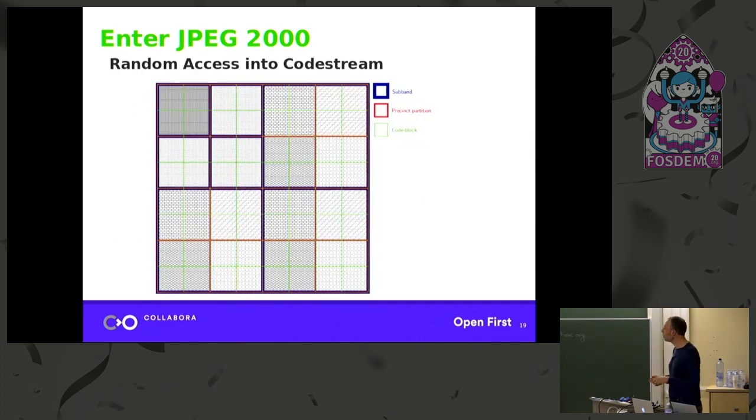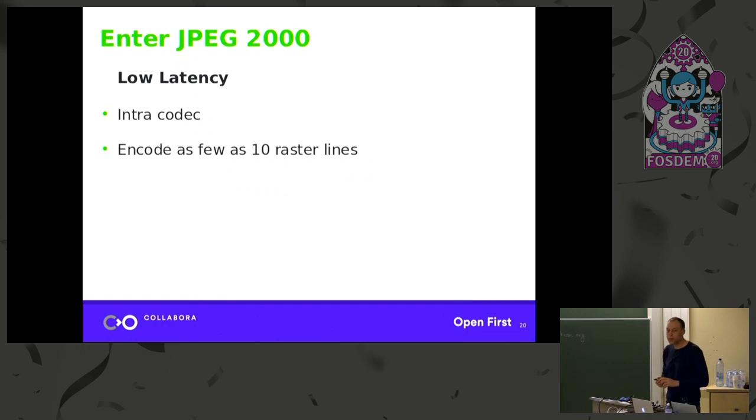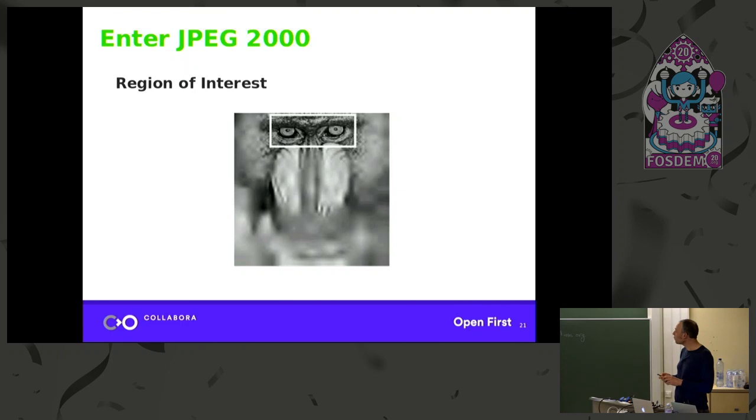And then you get random access into the code stream if you do progression by code blocks. So if you have an enormous image from remote sensing, let's say you want to just decode a small piece of the image, you can actually put markers into the code so that you can locate that particular region of the image and decode that, which is useful for huge images. We also do low latency because it's an intracodec. So each frame is encoded individually, and you can get very low latency, unlike H.264, where you have groups of pictures that are encoded together. Each frame is encoded separately. Also a region of interest where you just increase the quality in a certain part of the image. Let's say you're doing video conferencing, you want to focus on the face. So that's built in as well.